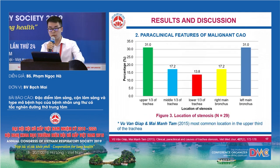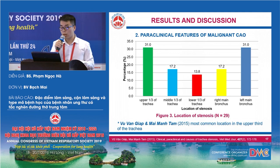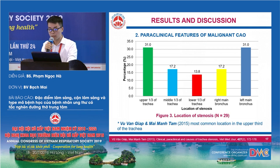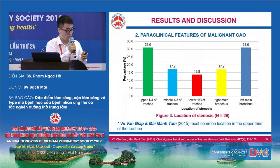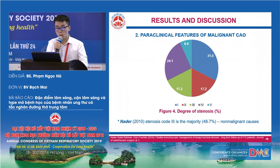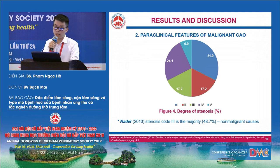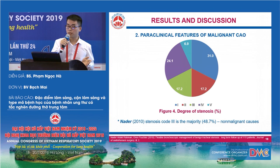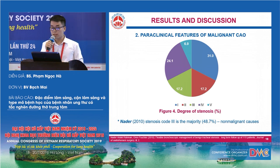Moving to figure three regarding location of stenosis: obstruction can occur anywhere in the central airway. The most common locations are the upper third of the trachea and the left main bronchus, both at 31%. This result is also similar to the findings of Vu Van Giap and Mai Mai Tam, where the most common location was the upper third of the trachea. Regarding degree of stenosis, mild stenosis — code 1 — is predominant, accounting for 31%, while complete stenosis is very small at 6.9%, with the rest occurring at different levels. This result differs from the NEDA study where stenosis code 3 was the majority, as that research was conducted on non-malignant CAO rather than malignant etiology as in our study.